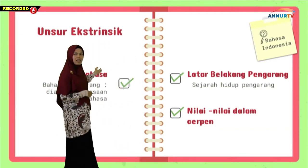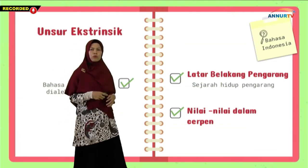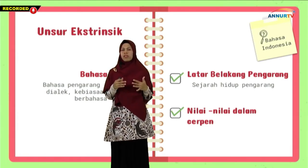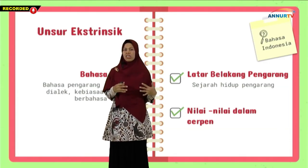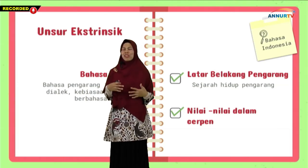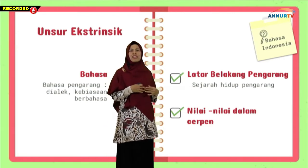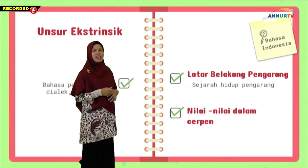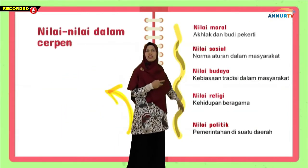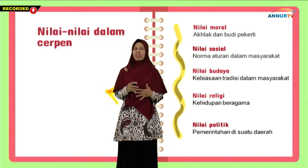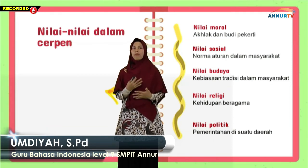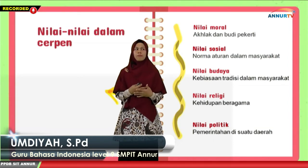Selanjutnya ada latar belakang pengarang. Ciri-cirinya biasanya ada sejarah hidup pengarang — maksudnya kalau misalkan pengarang cerpen itu seorang dokter, otomatis di dalam cerpennya itu akan sedikit menyerempet ke dunia kedokteran. Selanjutnya yang terakhir di unsur ekstrinsik adalah nilai-nilai dalam cerpen. Nilai-nilai itu yang pertama ada nilai moral, yaitu akhlak dan budi pekerti yang baik yang tersirat dalam cerpen.